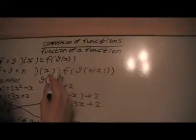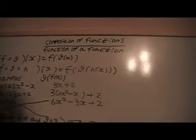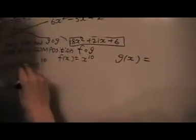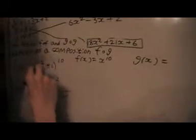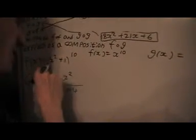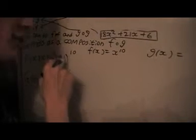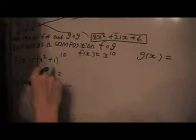Now, I'm putting in the g of x in f of x. So, my outer function here is going to be x to the 10. And then notice, to get this function, if I substitute x squared plus 1 for x, I've got this function.